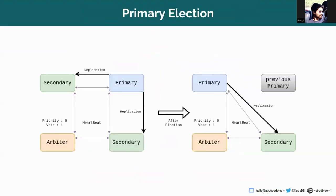Now let's talk about the election — why this is so important. In the first picture, you can see that two secondaries are replicating data from the primary and they know each other's status via heartbeat messages. If the primary goes down, an election will be triggered and a new node, which was previously a secondary, will be elected as primary. So if you initialize a replica set, step down the primary, or reconfigure your replica set, one election will be triggered. Mainly, after 10 seconds of heartbeat messages, if the secondaries and arbiter can't communicate with the primary, a new election will take place.